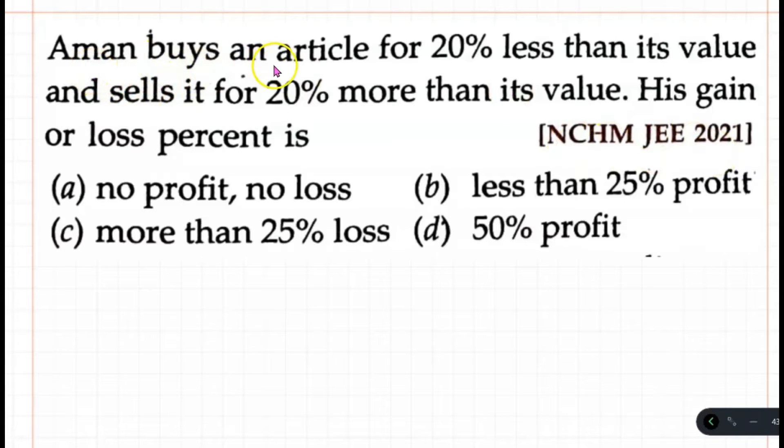Aman buys an article for 20% less than its value and sells it for 20% more than its value. So is gain or loss percentage?